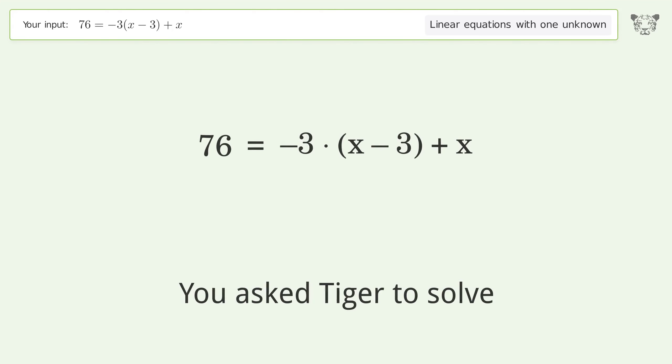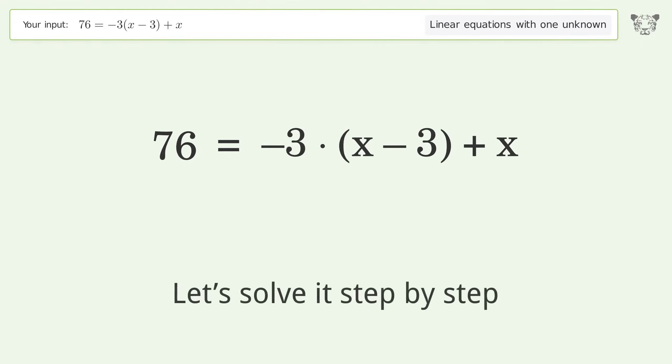You asked Tiger to solve this. This deals with linear equations with one unknown. The final result is x equals negative 67 over 2. Let's solve it step by step.